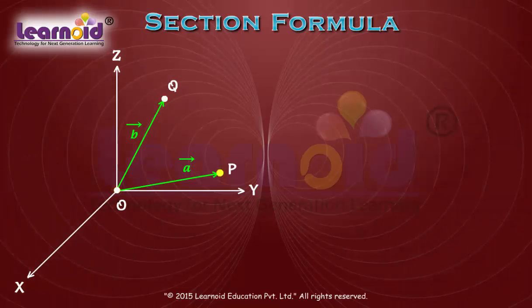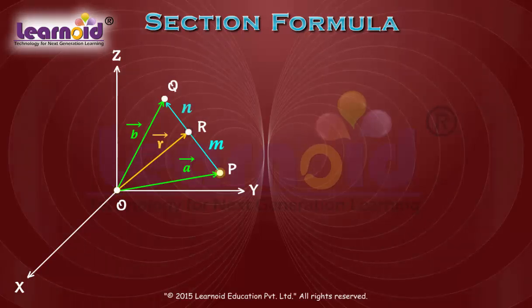Now, let us mark a point R on the line segment PQ such that it divides PQ into ratio m is to n internally or externally.